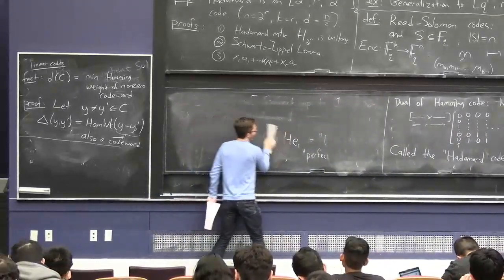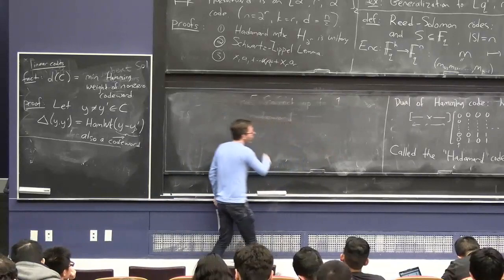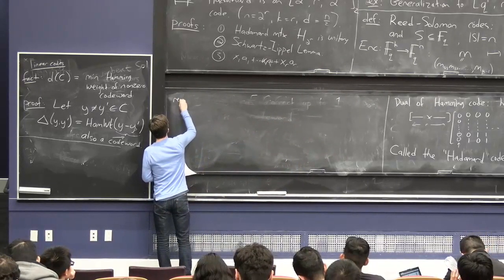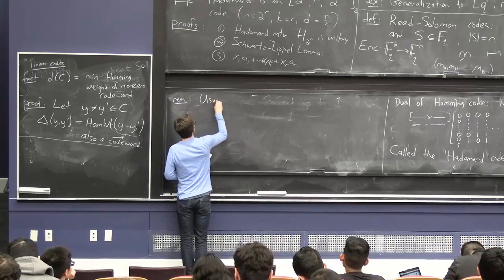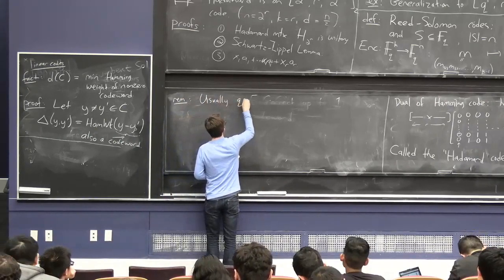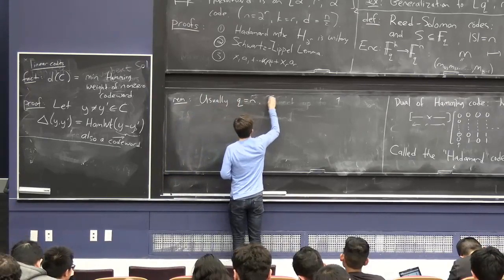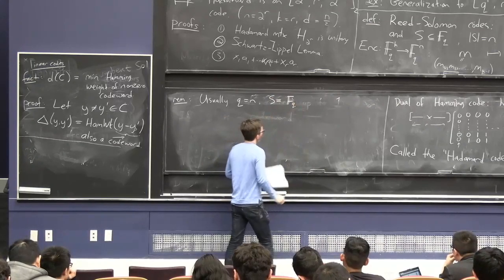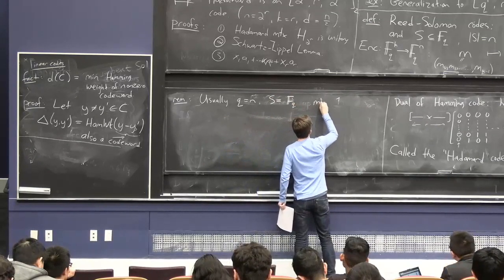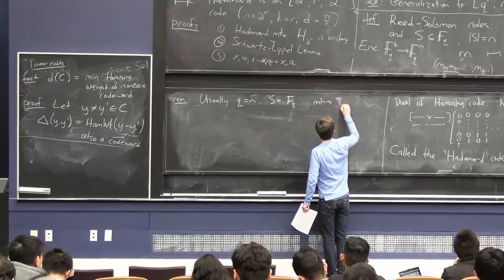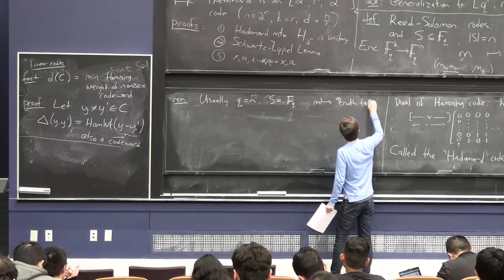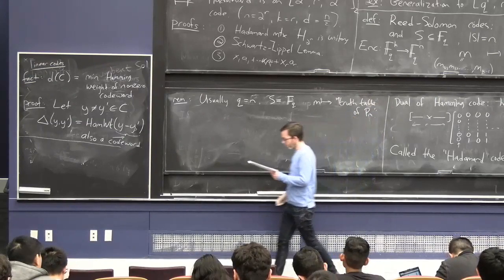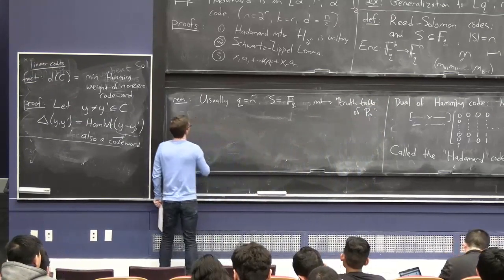Usually Q equals N, and S is just everything. Usually Q is just N, and S is just everything, the whole field of size Q. And then really, it's just like m maps to the whole truth table of Pm.